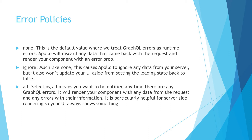Apollo has three error policies. The default is none, which treats GraphQL errors as runtime errors — Apollo discards any data that came back with the request, and you render your component with the error property. The ignore error policy causes Apollo to ignore any errors from your server and also does not update your UI, so you don't get anything back. And then all means you want to get both the data and the error, and you can decide how to render once you've examined your error. This is particularly helpful for server-side rendering, so your UI always shows something.